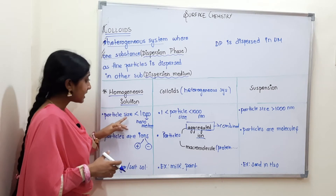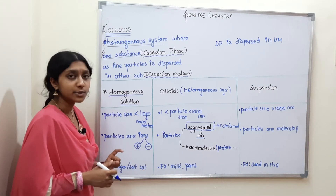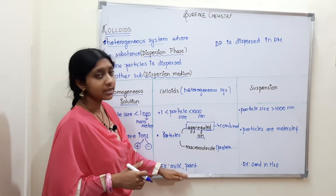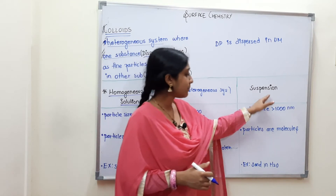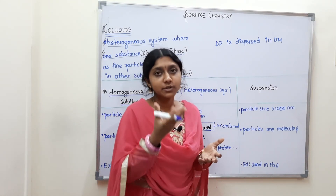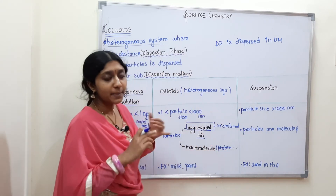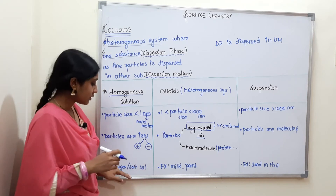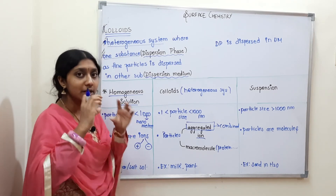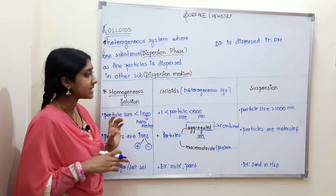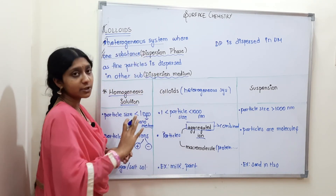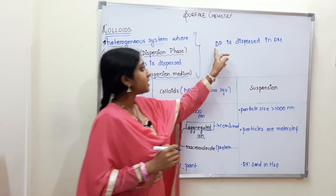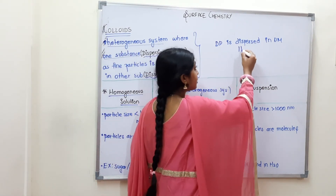For examples: a homogeneous solution is sugar or salt solution — it is clear. A colloidal solution includes milk and paint — these are colloids. Suspension is sand in water. So the dispersed phase is dispersed in the dispersion medium to give a colloidal solution.